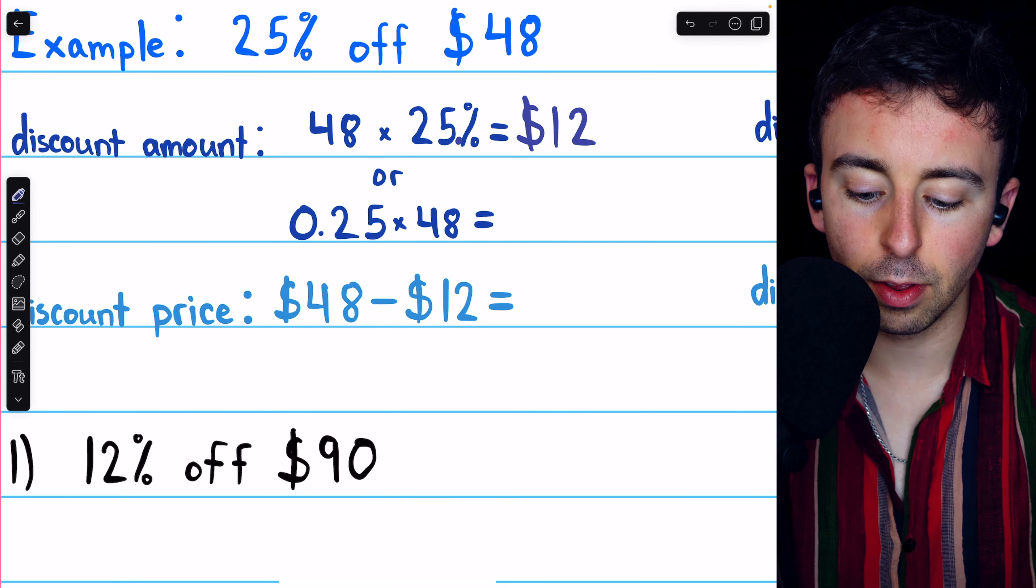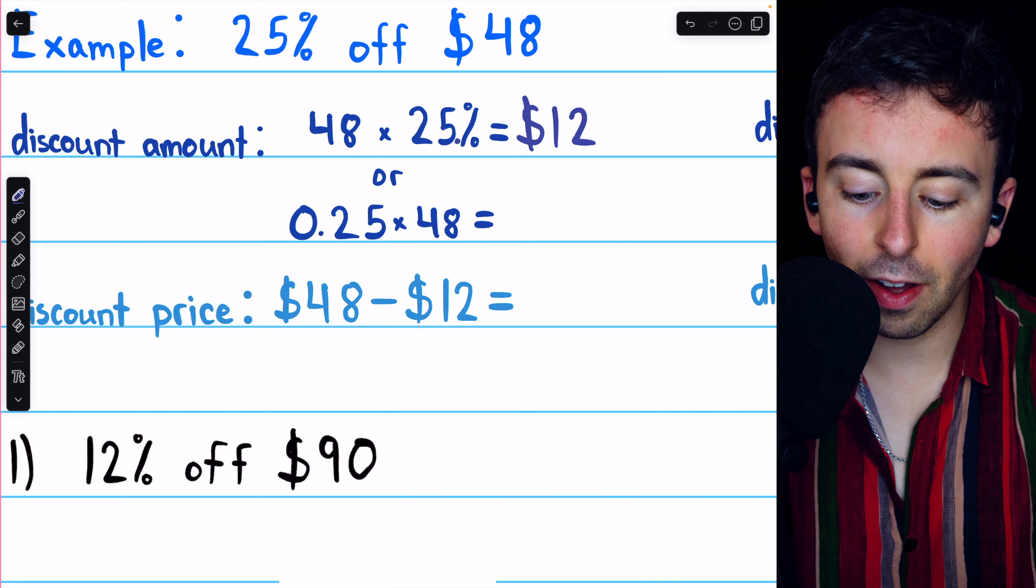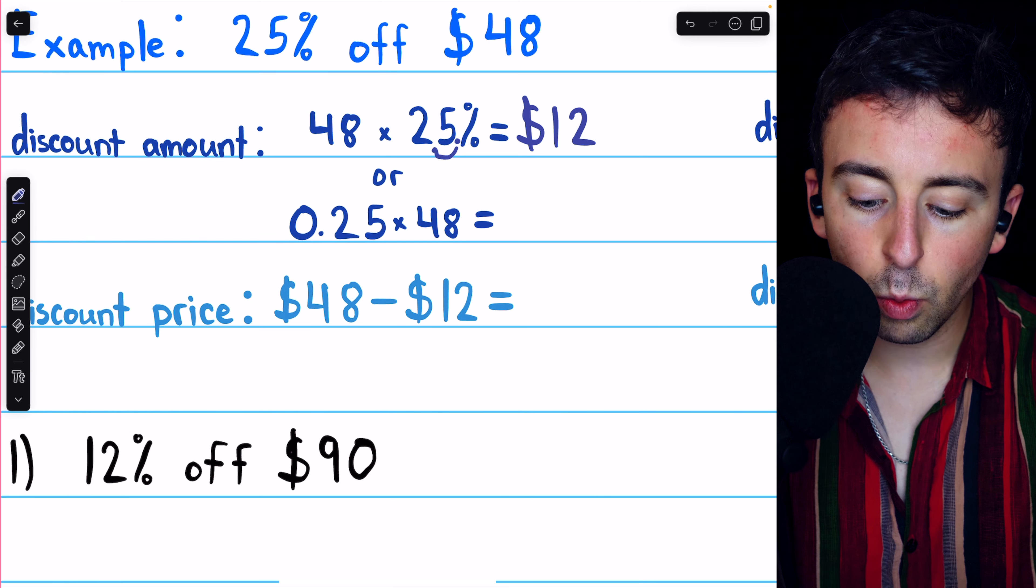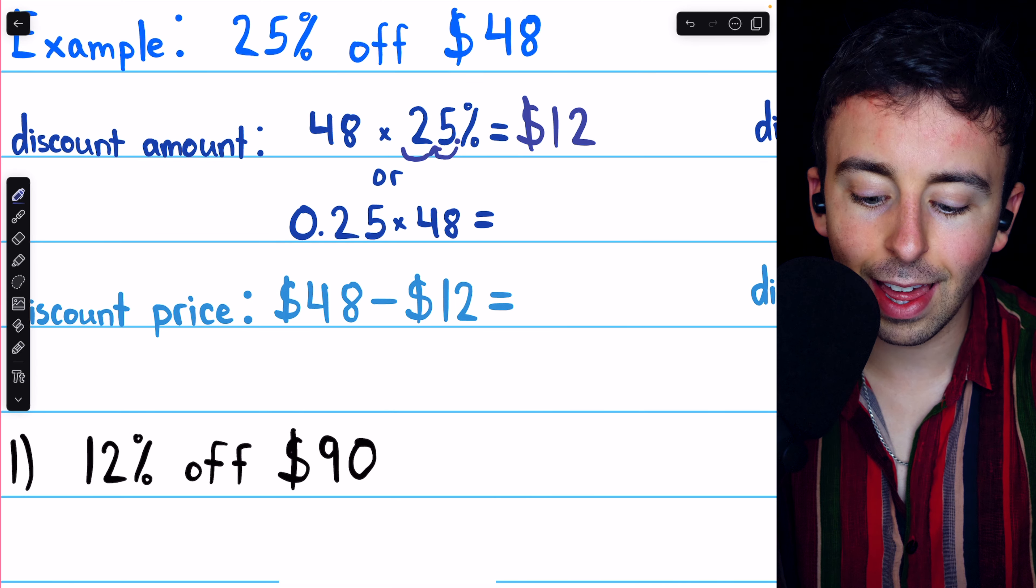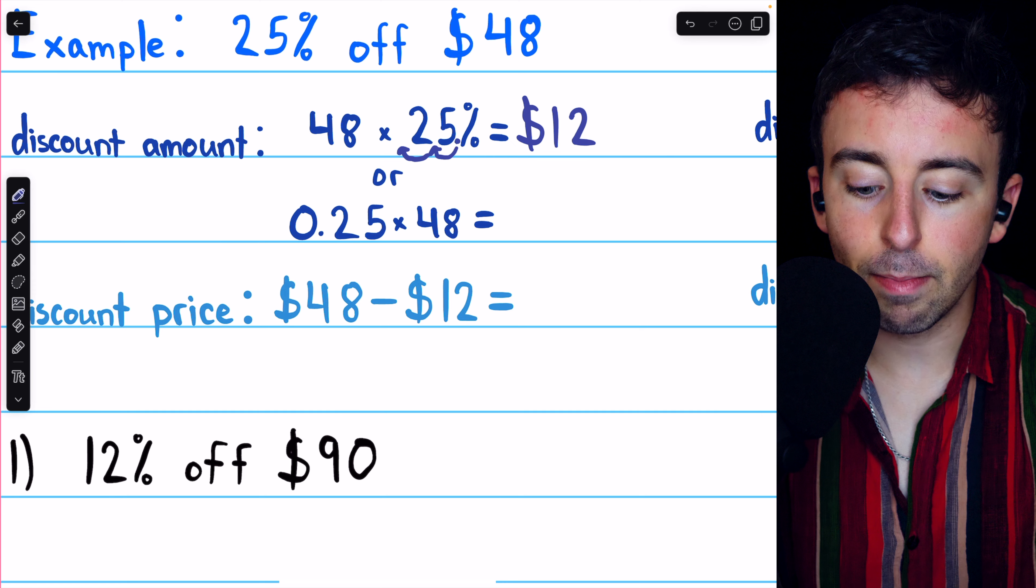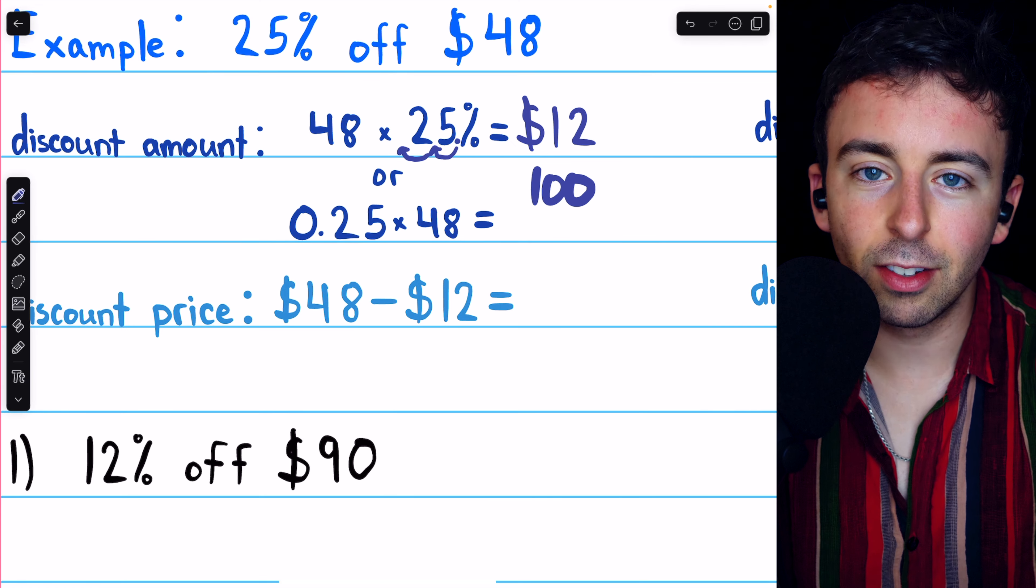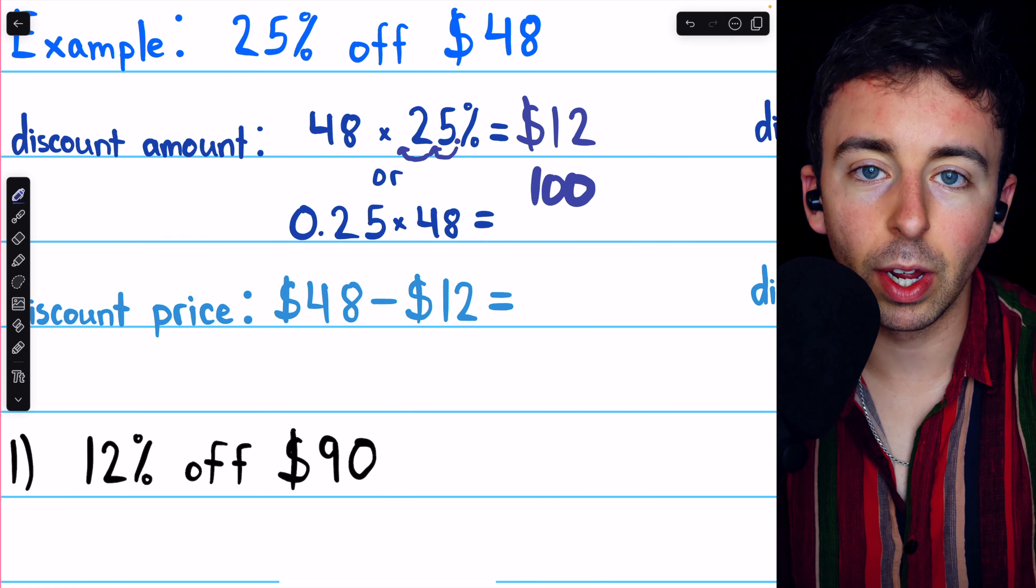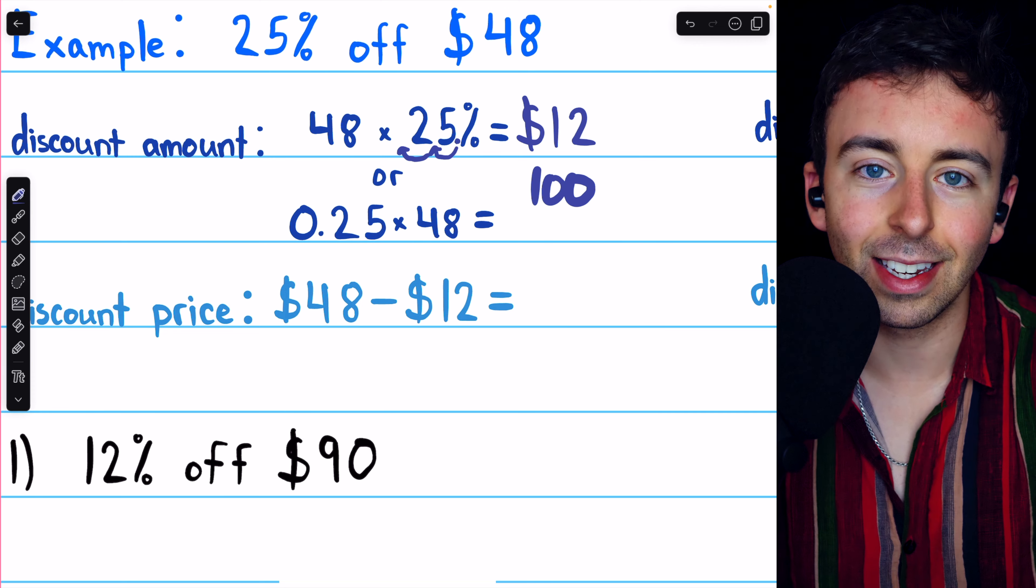In 25%, we don't see a decimal point because it's not necessary to write one. But if we did write one, it would be right there, after the five. So to turn 25% into a decimal, we move that decimal point to the left two places.